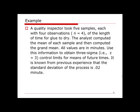Now let's take a look at an example. A quality inspector took five samples, each with four observations of the length of time for glue to dry. The analyst computed the mean of each sample and then the grand mean — the average of the sample means. All values are in minutes. We need to obtain three-sigma control limits for means of future time. It is known from previous experience that the standard deviation of the process is 0.02 minutes, so we know sigma.